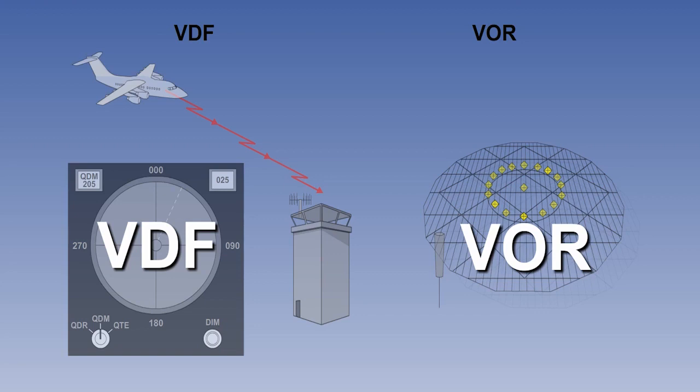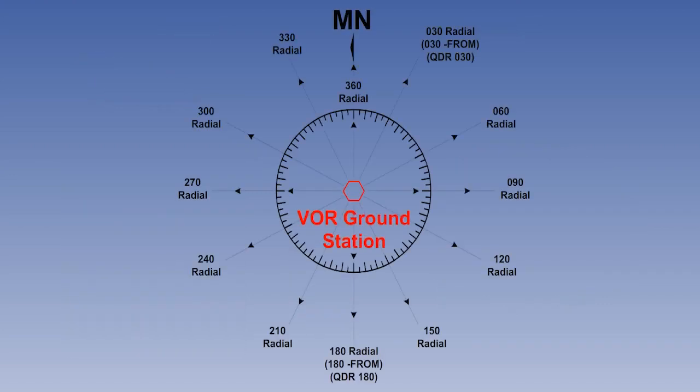The easier case is a bearing measured at the ground station. If you remember, the two navigational aids which operate on this principle are VDF and VOR. It is fairly self-evident that VDF is measured at the ground station, but it may not be quite so obvious that VOR is as well.